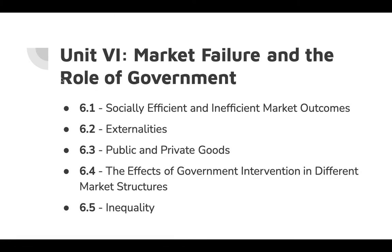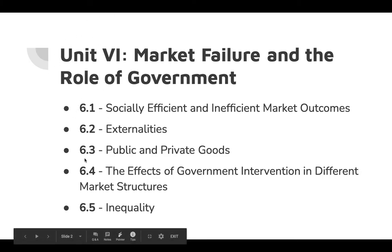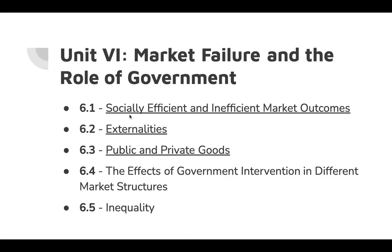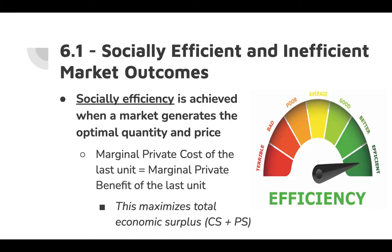This final unit only has six sections. We're going to take care of three of those sections today, and then later in the week we'll cover the final two. Today we're going to look at socially efficient and inefficient market outcomes, externalities, and then public and private goods.